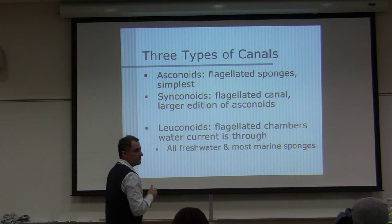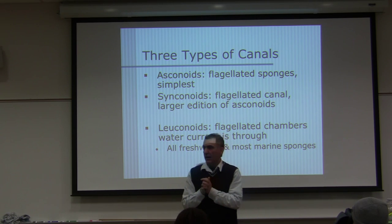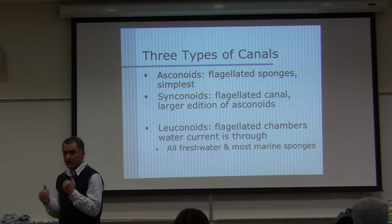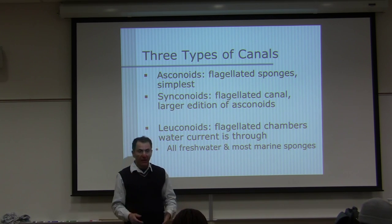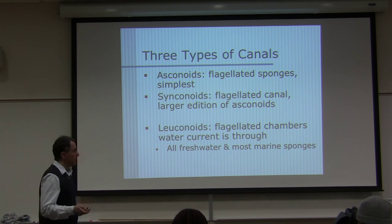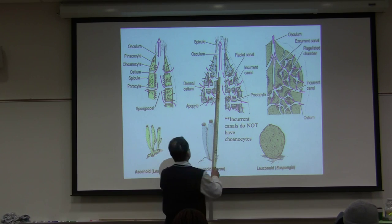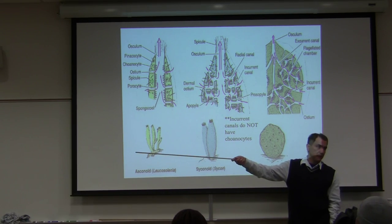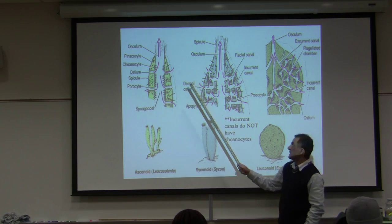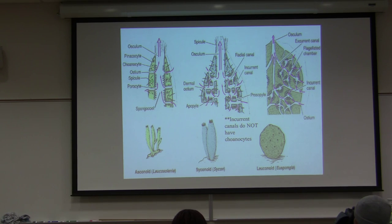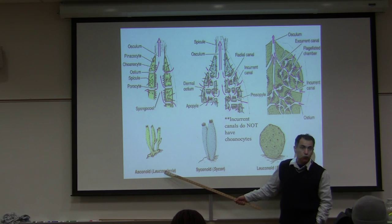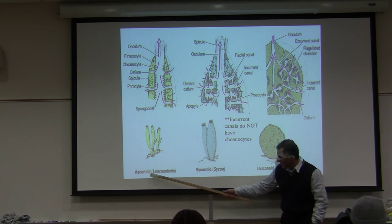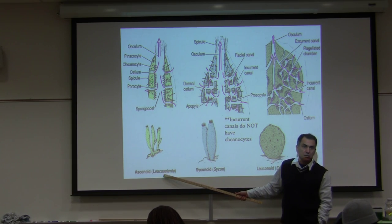Sponges are classified based on their spicules, general shape, and a few other characteristics. The most simple canal type is asconoid, with an example species being Leucosolenia — we do have a microscopic slide of this. The genus Leucosolenia is an asconoid type. On the surface of the animal, the outer cells are similar to squamous epithelial cells.